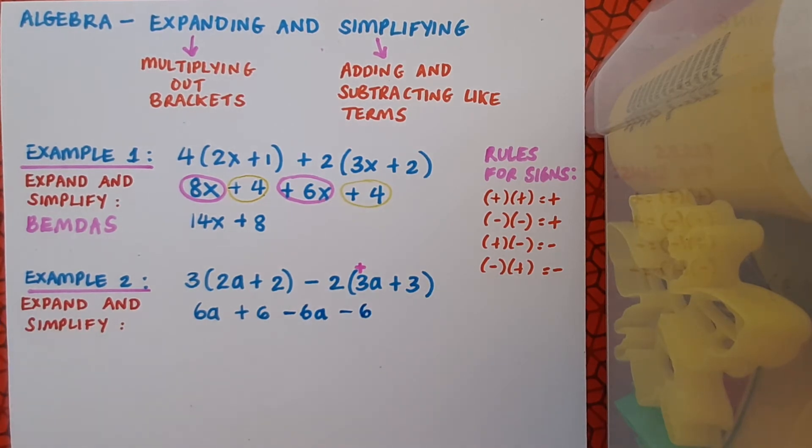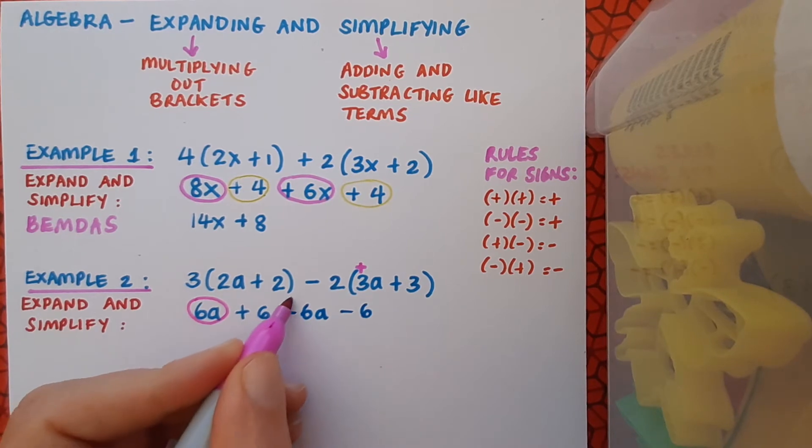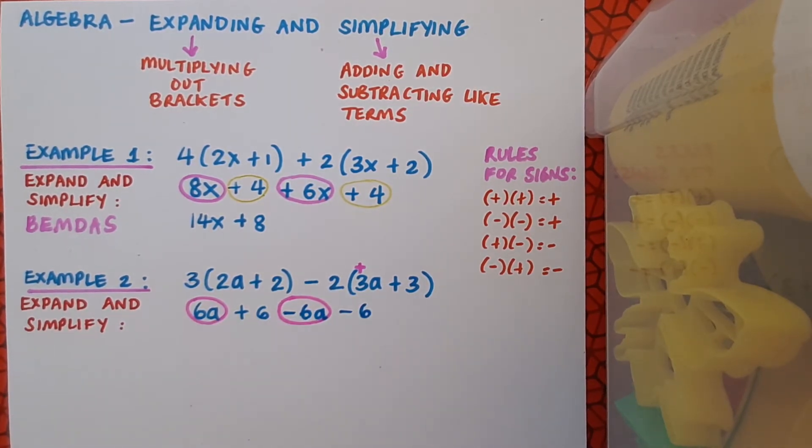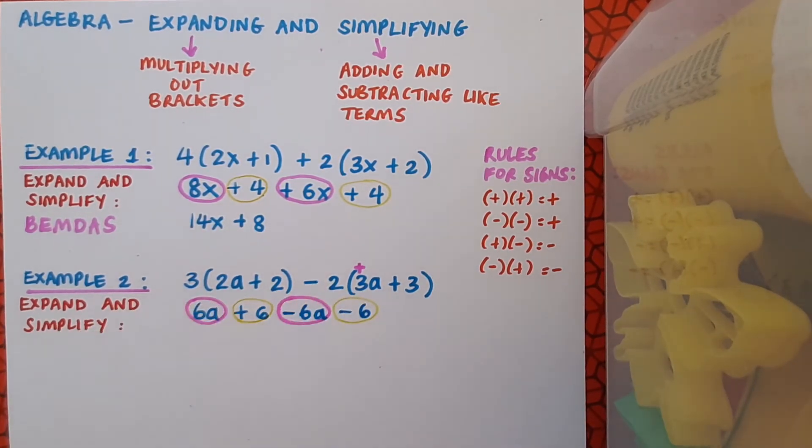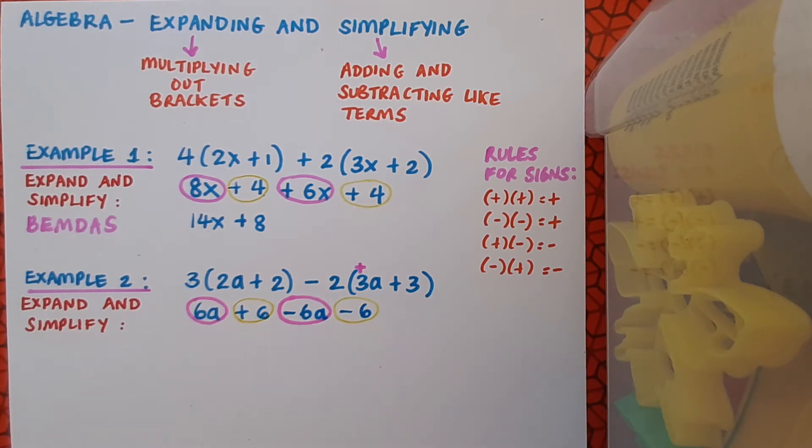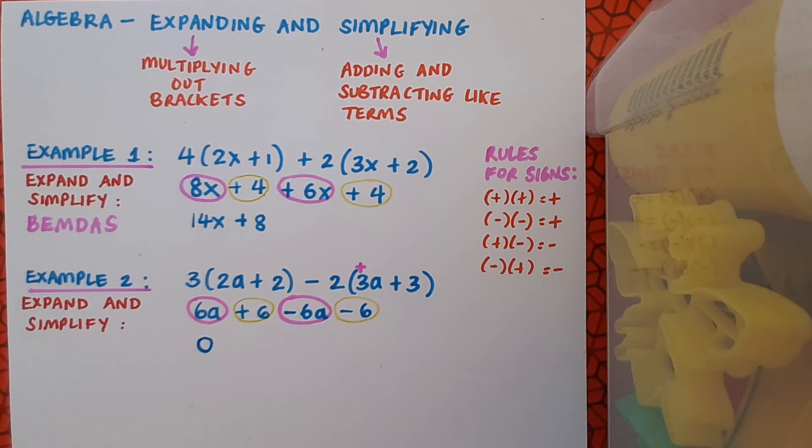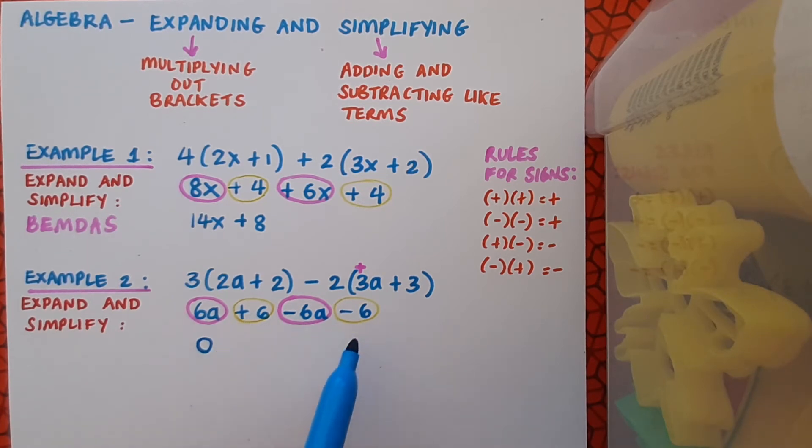So I've completed the expand part of my instruction. Now I have to simplify. This is an interesting case. When I identify my like terms, 6a and minus 6a, and plus 6 and minus 6, what do you notice about the result when I add and subtract them? Well, 6a minus 6a, 6 minus 6, it's the coefficients that I'm working with really, is 0. So I have no a's. And 6 minus 6 from the constants also gives me 0. So I can write my answer as 0. I can call this cancelling out. The 6a and the minus 6a cancel each other out. Plus 6 and the minus 6 do the same. So 0 is the end result for example 2.